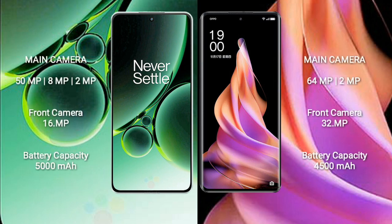OnePlus Nord 3 features a rear triple camera setup: 50MP plus 8MP plus 2MP, and a 16MP front camera. OPPO Reno 9 features a rear dual camera setup: 64MP plus 2MP, and a 32MP front camera.